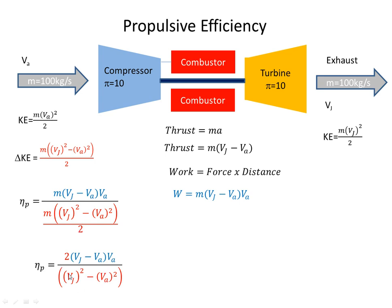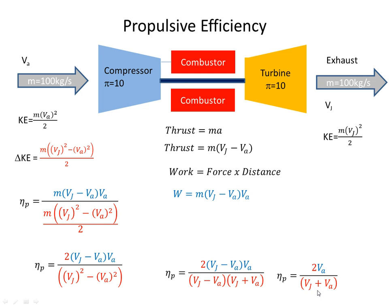Getting rid of the 2 and bringing it up, I get this equation, and I can see that Vj² minus Va² is just equal to (Vj minus Va)(Vj plus Va). From this we can see that if we lower this velocity — the closer Vj gets to Va — the greater the efficiency.